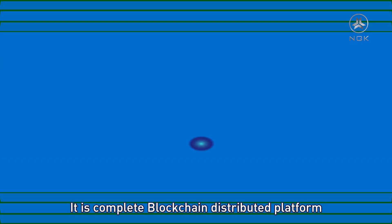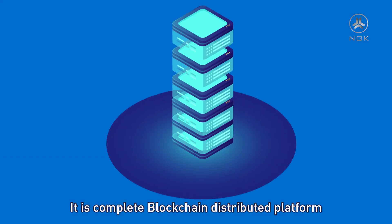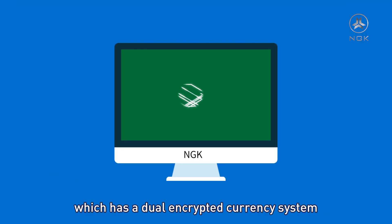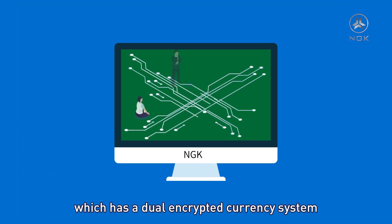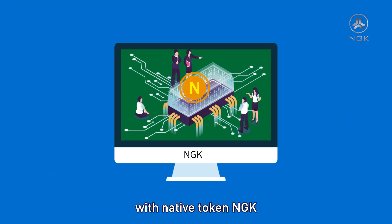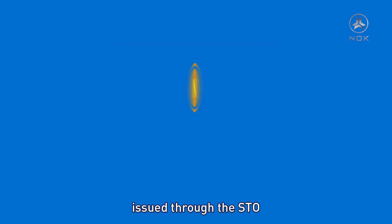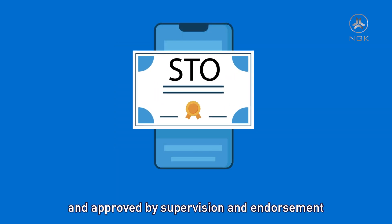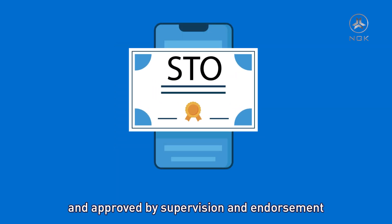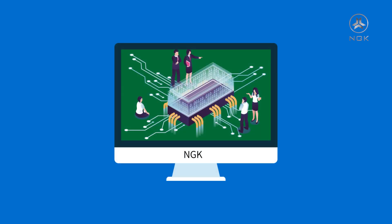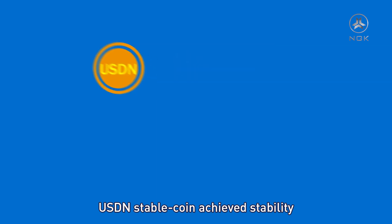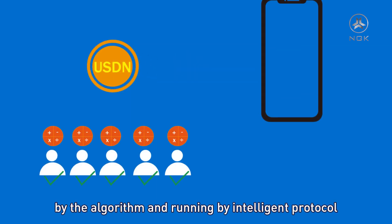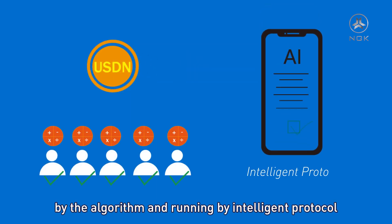It is a complete blockchain distributed platform, which has a dual encrypted currency system with native token NGK, issued through the STO and approved by supervision and endorsement. USDN Stablecoin achieves stability by algorithm and runs through intelligent protocol.